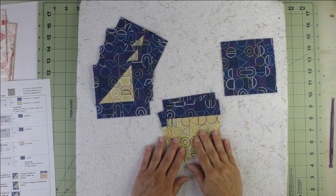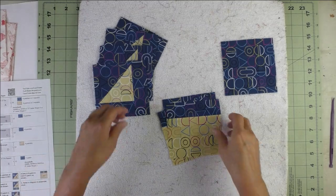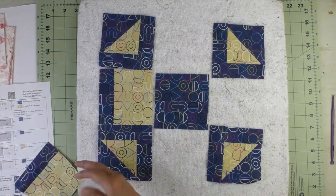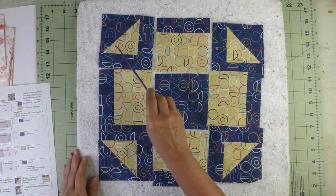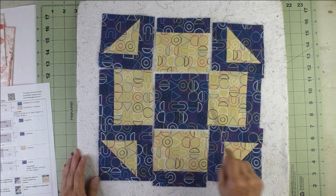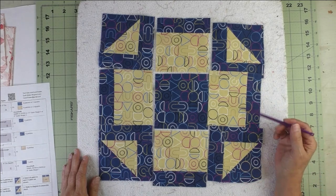From step four and step five, we just lay the block out and sew it together. We sew the units together into rows, so this is row one, row two, row three. Press your seams open, then sew all the rows together.